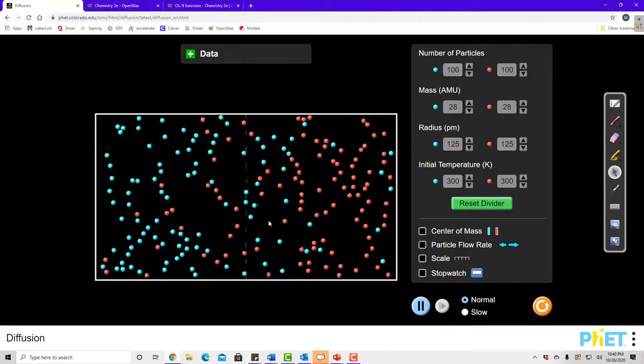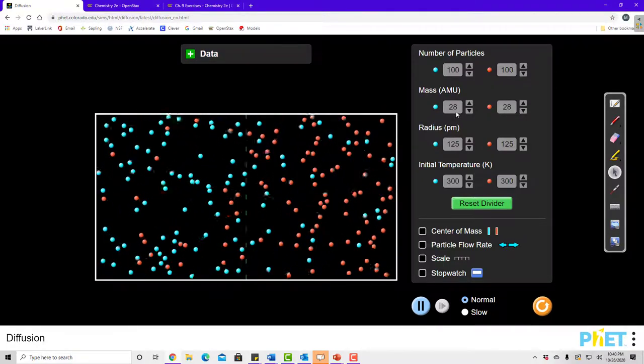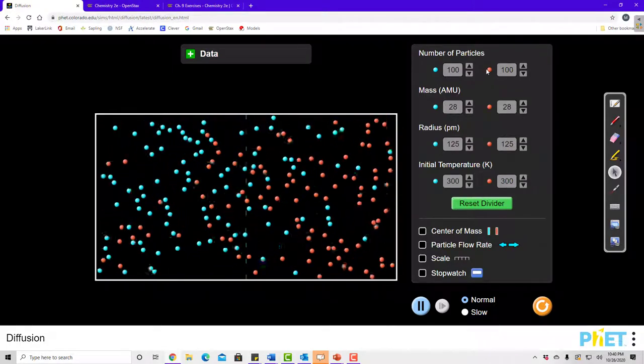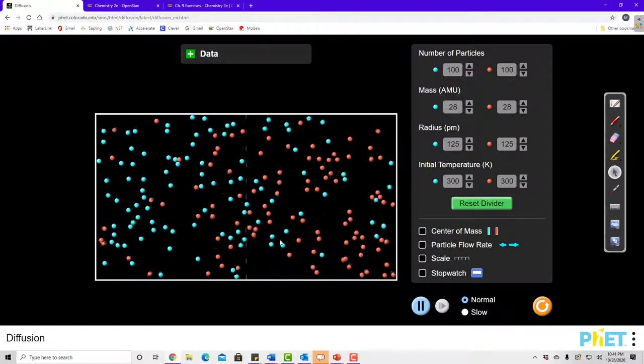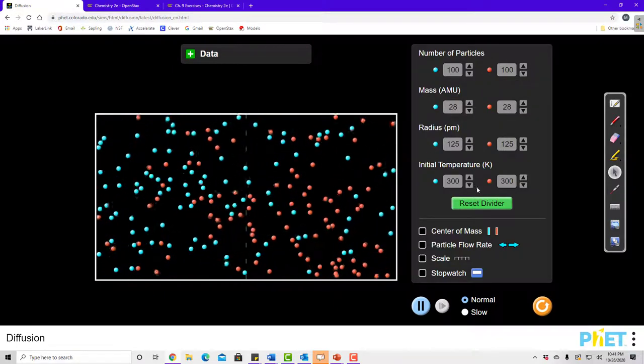In this simulation, I started both of them out at the same mass, and the same radius, and the same temperature, and the same amount of particles. So they mixed pretty evenly, or anyway they should because all of their numbers are the same.